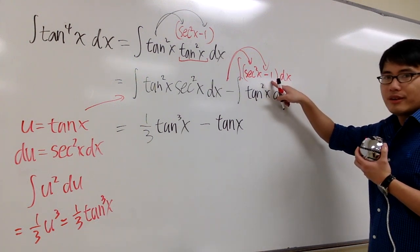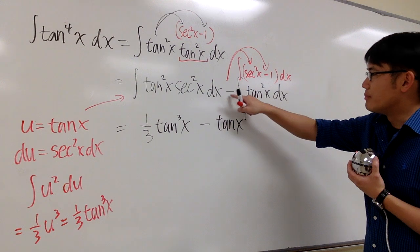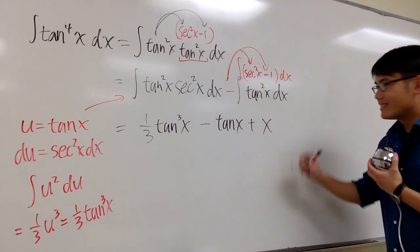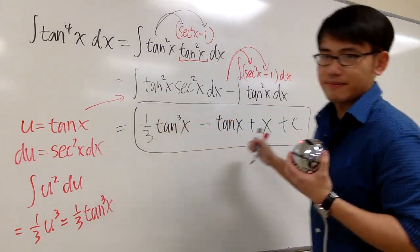How about 1 right here, in the x world? The integral of 1 is x, but this is a minus, minus, so it becomes plus x. And we're done. So this is the answer for the tangent to the 4th power x. That's it.